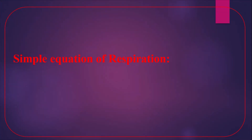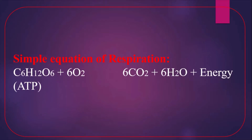The simple equation of respiration: one molecule of glucose (C6H12O6) and six molecules of oxygen react to produce six molecules of carbon dioxide, six molecules of water, and energy in the form of ATP — adenosine triphosphate. So three types of things are produced: carbon dioxide, water, and energy.